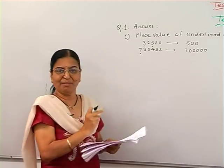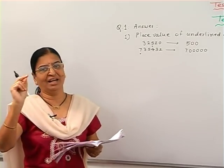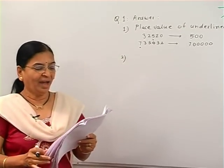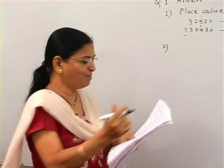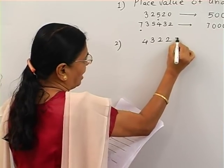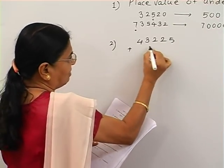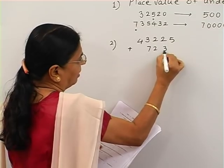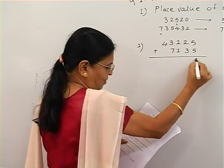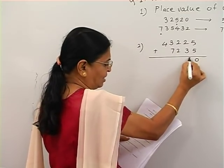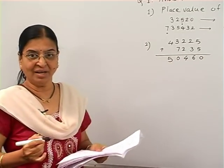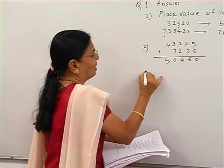Have you written this? Then tick mark your answer and write one mark for it. Now add the numbers: 4,3,2,2,2,5 plus 7,2,3,5. This is very easy. Can you add the numbers? Check it — the answer is C. Is it your answer? Check it and mark it also.